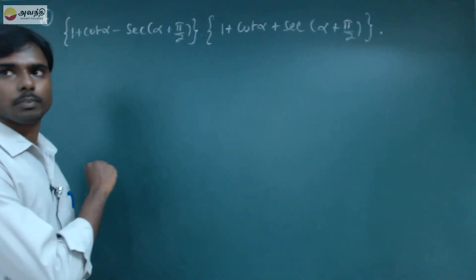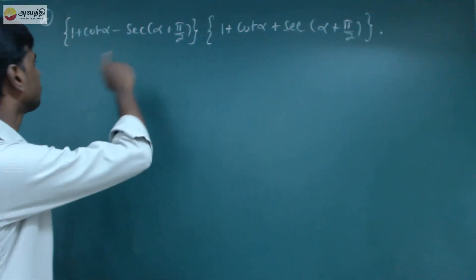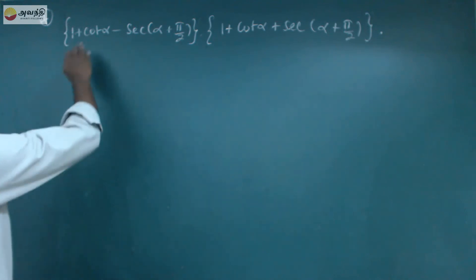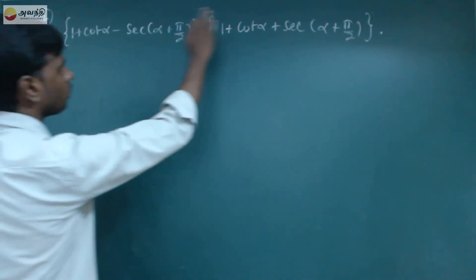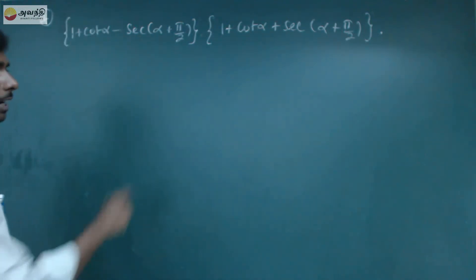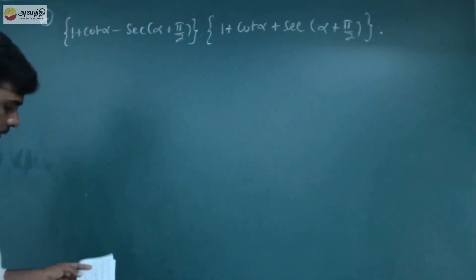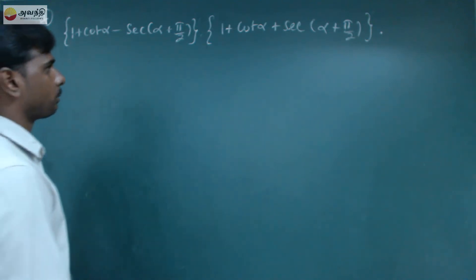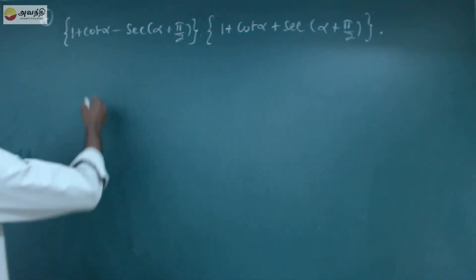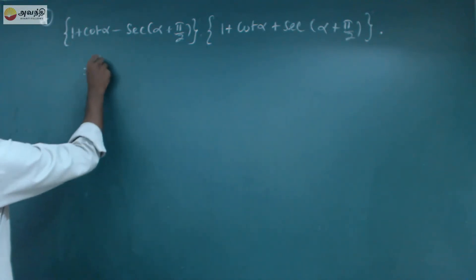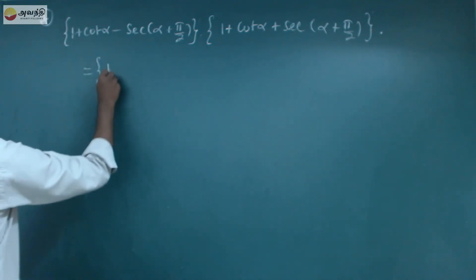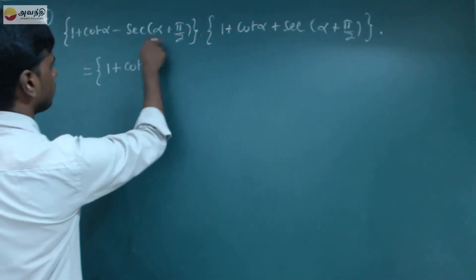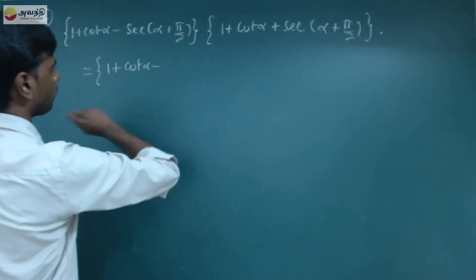Okay, next question, exercise 6.2. If you multiply with trigonometry values, you have to check 2 cot alpha. So now that's equal to 1 plus cot alpha minus the secant alpha plus 1, plus pi by 2.